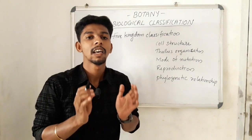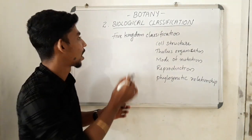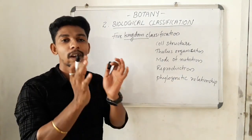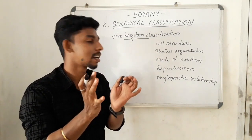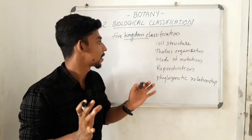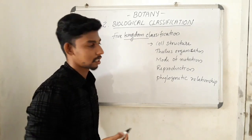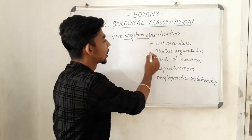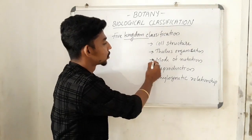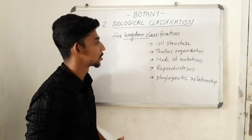R.H. Whittaker classified the organisms into five kingdoms. The criteria used for Whittaker's classification are: cell structure, thallus organization, mode of nutrition, reproduction, and phylogenetic relationship.